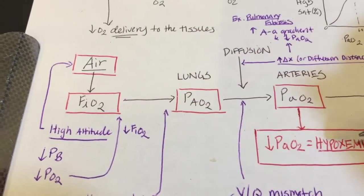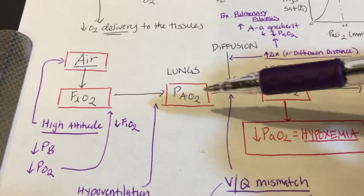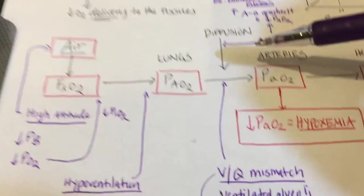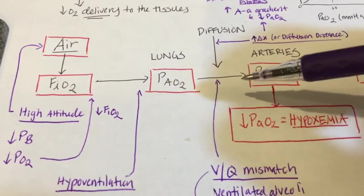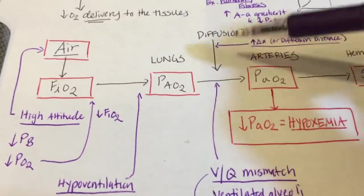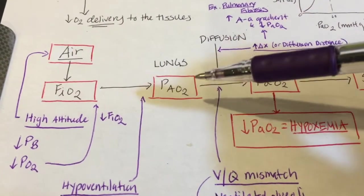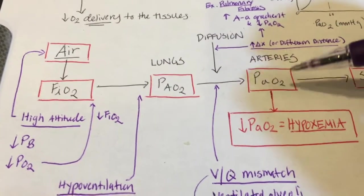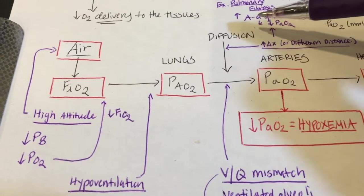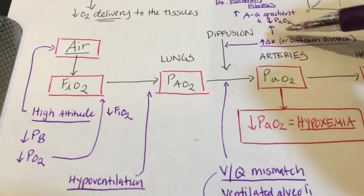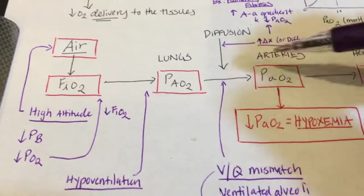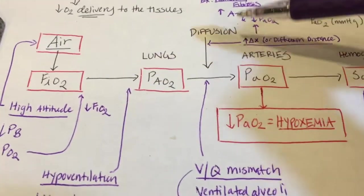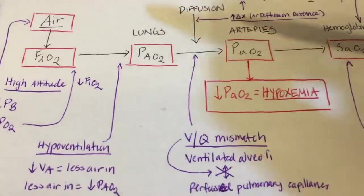The next step is the process of diffusion from lungs into the arteries. What can go wrong here? If you increase the diffusion distance — for example, thickening of the alveolar walls due to pulmonary fibrosis — you get decreased oxygen getting through that thicker wall into your arteries. This results in an increased A-a gradient (alveolar-arterial gradient in PaO2), and overall the partial pressure of oxygen in the arteries decreases. This is another cause of hypoxemia.